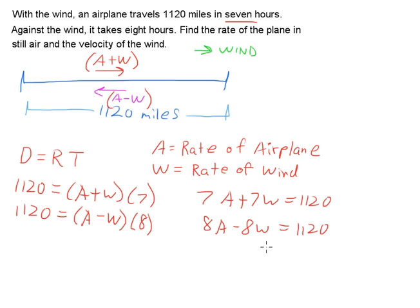I am going to solve the second equation here for A. So solving for A, I get A equals W plus 140. I'm going to take that quantity, that W plus 140, and plug it in for A in the other equation. This is solving a system of equations with two variables using the substitution method.